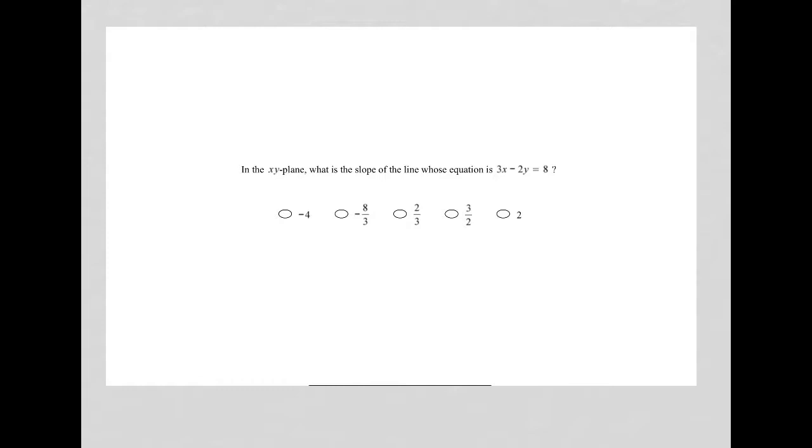Anytime I see slope of a line, there's a couple things that I think about. There's a slope equation, which says m equals y2 minus y1 over x2 minus x1, assuming that you have two points of a line.